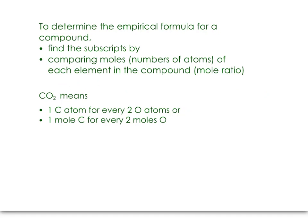For the rest of this lesson, we are going to work on how to determine the empirical formula for a compound through calculations. We want to find the subscripts in our chemical formula, and they should be in the smallest whole number ratio possible. We're going to do that by comparing the number of moles of each element in the compound. The mole allows us to talk about numbers of atoms, which is what subscripts are. We're going to look at the mole ratios between the atoms in the compound.